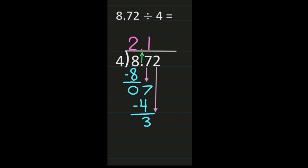Because I'm bringing the 2 down, I have to start all of these steps again. So I have 32 divided by 4. 32 divided by 4 is 8. 8 times 4, because we multiply next, is 32. After I multiply, I subtract. 32 minus 32 is 0. I don't have any more digits in my dividend, so I'm finished. My quotient is 2 and 18 hundredths.